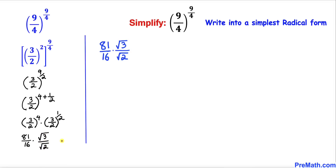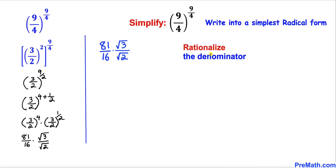Since we are running out of space I have copied this problem over here. We can see that we have a radical in the denominator, and we know that we must not have a radical in the denominator.